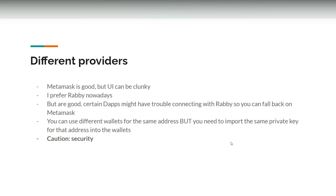People ask what's the difference between MetaMask and other wallets like Coinbase. Basically they're all pretty much the same. MetaMask is widely used because a lot of decentralized applications use it, but the user interface can be a bit clunky. Another wallet provider I prefer nowadays is called Rabby by DeBank. Rabby is really good because you don't have to tinker with the network manually — it already has all the networks built in — so you don't have to do manual configuration like you do with MetaMask.